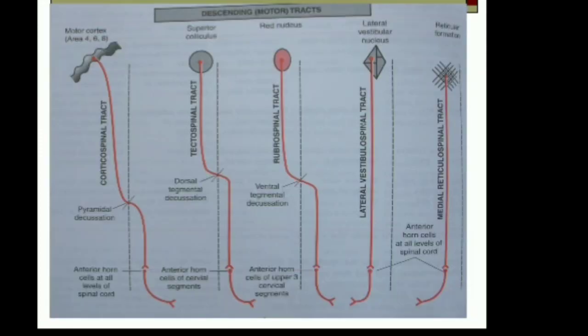This diagram shows various descending tracts. You can see here the corticospinal tract — which is a pyramidal tract — tectospinal tract, rubrospinal, vestibulospinal and reticulospinal tract.